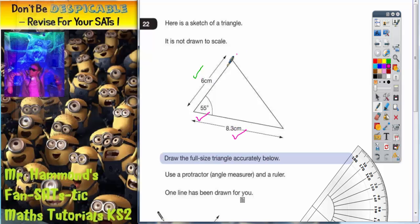Our 6 centimeter line is already done. The only thing that's not been done for us is this line here, because we have no information at all about that line.